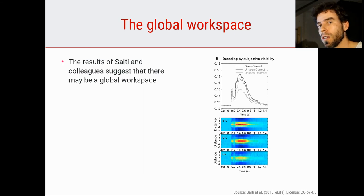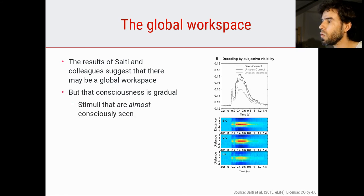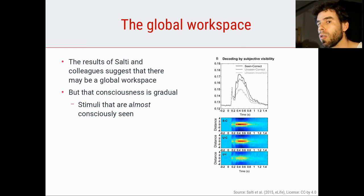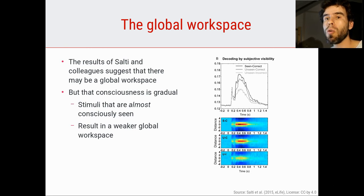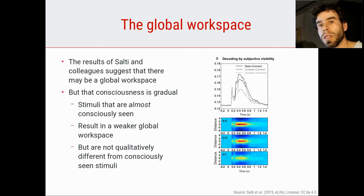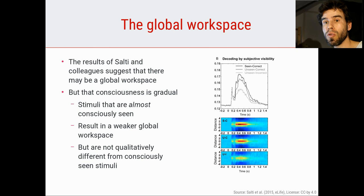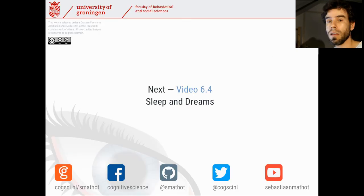What does this show? I think it is somewhat in line with the idea of a global workspace. It also suggests that consciousness is gradual — stimuli can be almost seen. If you claim that you didn't see a stimulus but nevertheless report its location correctly, that stimulus was on the brink of being consciously perceived. The global workspace can exist to a stronger or weaker extent; the coalitions in your brain that correspond to consciousness can be stronger or looser depending on how conscious you are of something. It shows there is not really a qualitative difference between consciousness and non-consciousness, but that consciousness is really a gradual process that you can have to different extents. With that, let's move on to the next video, video 6.4, in which we're going to take a look at sleep and dreams.